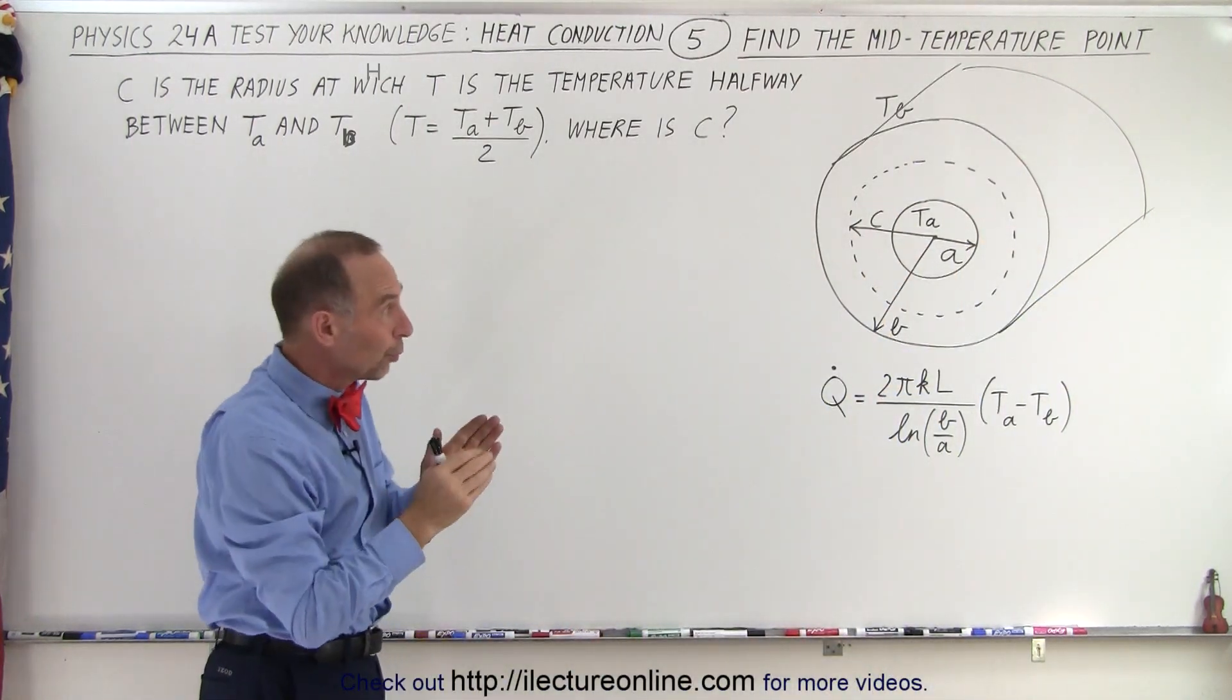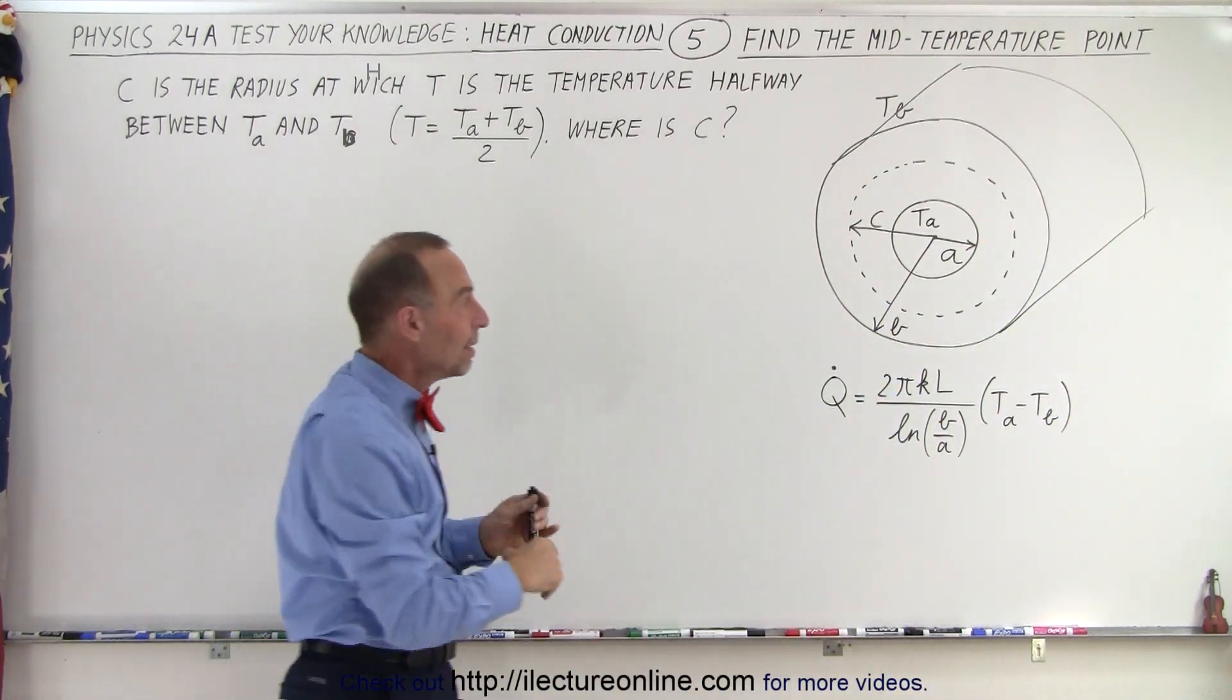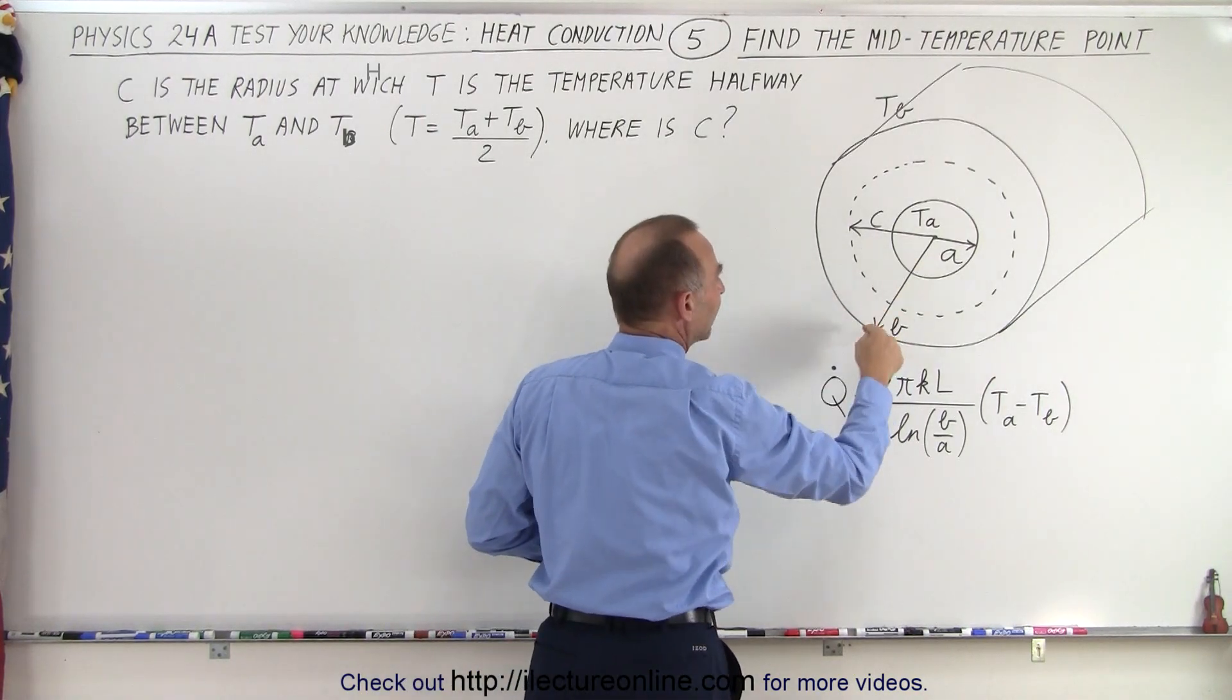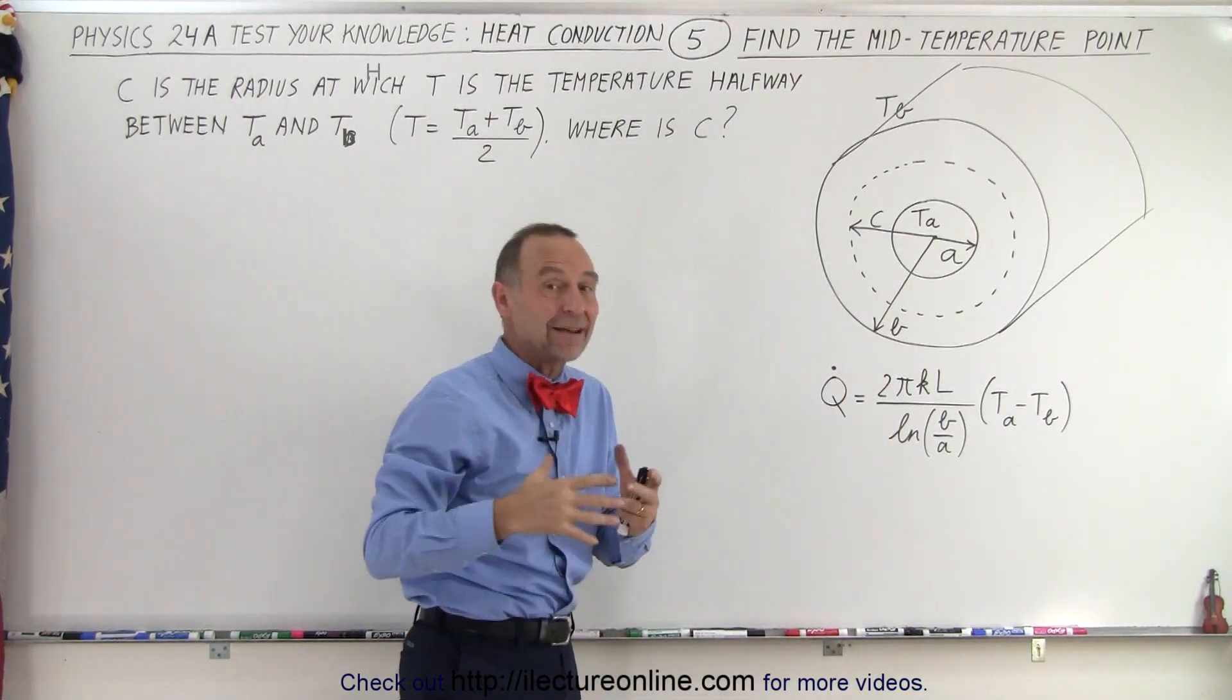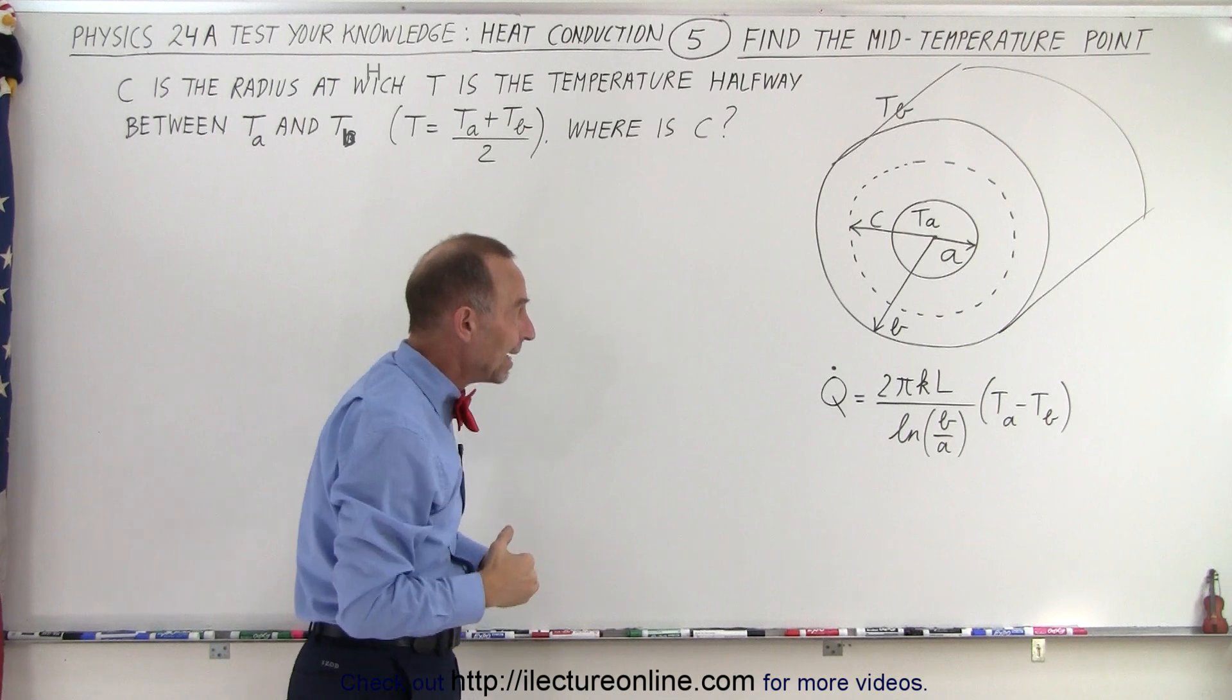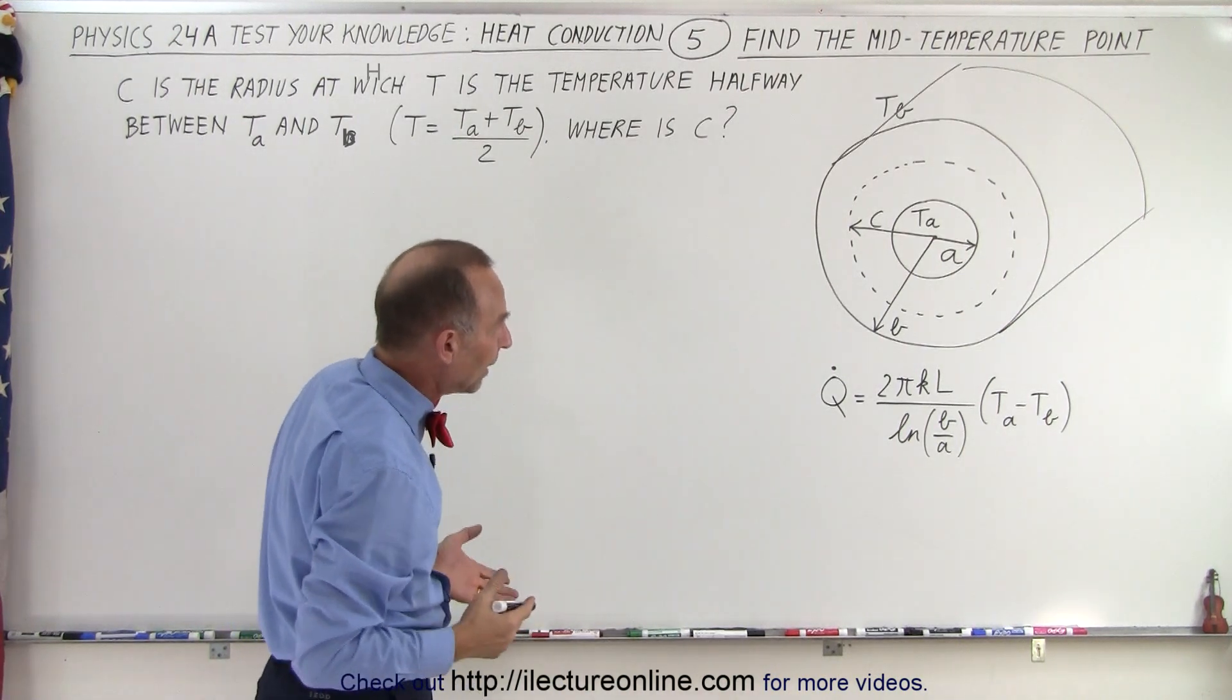And so we're looking for the point where the temperature is halfway between the inside temperature and the outside temperature, kind of the average temperature between T_A and T_B. So how do we do that?